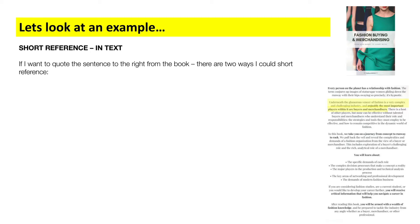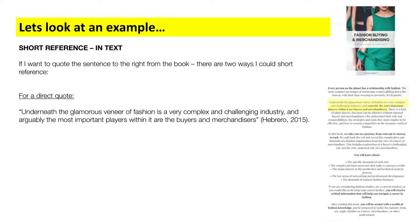Let's take a quick look at an example of short references in text. If you want to quote a sentence from a book, there are two ways to short reference. First, a direct quote where you quote word for word what the author is saying — you have opening and closing quotation marks, and at the very end you add the author's surname followed by a comma, the year that the book was published, all in brackets, followed by a full stop.